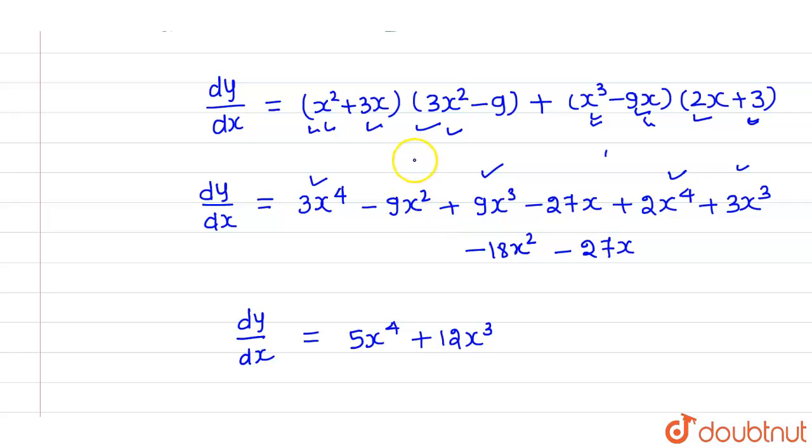Okay, now adding square terms, so this is minus 9x square and this is minus 18x square, so this comes out to be minus 27x square. And we only left with x terms, so these are minus 27x and minus 27x, so this will come out to be minus 54x. So this is the differentiation of y with respect to x.